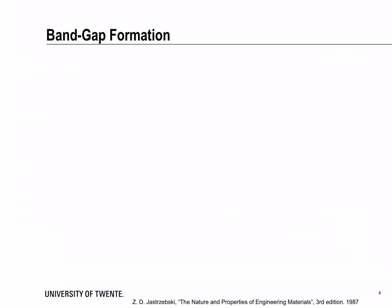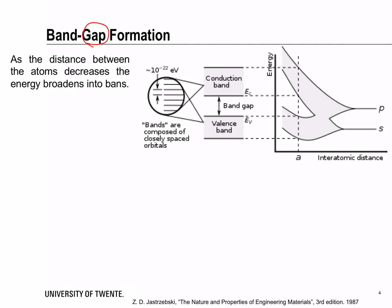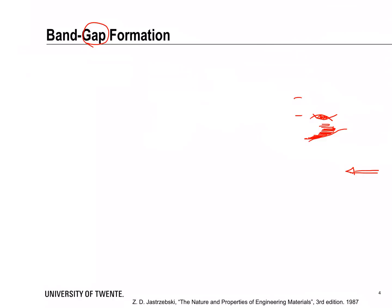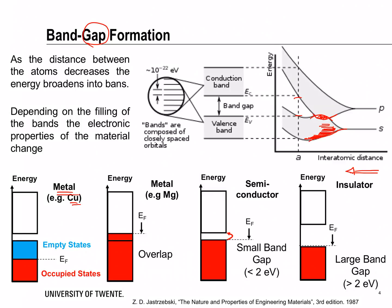Once you have bands, you also have the possibility to have gaps. As you reduce the interatomic distance, depending on the material properties you could have overlap between two different bands or a gap, and that drastically affects the properties of the material. For instance, in a metal such as copper, you have a valence band that is partially empty and partially filled, so electrons can move into these empty states and move freely to have electrical conductivity.